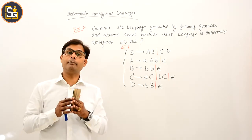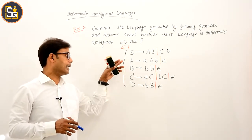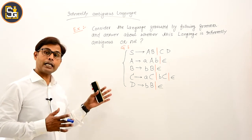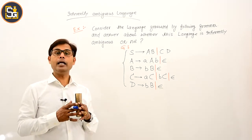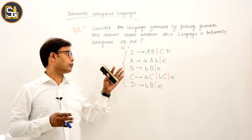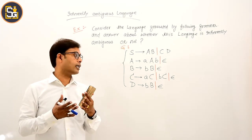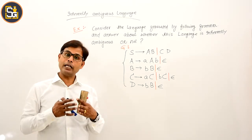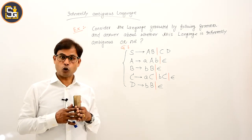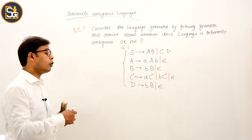So, always languages are inherently ambiguous — not grammars. Now what we need to do is determine whether the language generated by this grammar is inherently ambiguous or not. This concept is not strictly part of compiler design, but since ambiguity is covered in compiler design, we include it here. First, let us find what language this grammar is generating — we need to write that down.